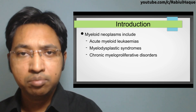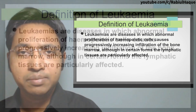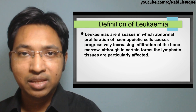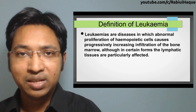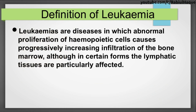This definition is very important for your written and oral examinations. Leukemias are diseases in which abnormal proliferation of hemopoietic cells causes progressively increasing infiltration of the bone marrow, although in certain forms the lymphatic tissues are particularly affected.